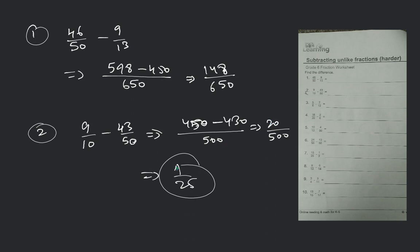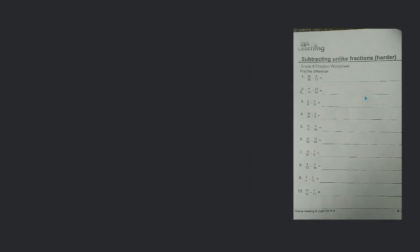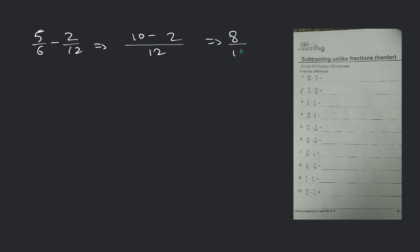Understood? Number 3: 5 by 6 minus 2 by 12. The LCM will be 12. It will be giving 10 minus 2 = 8 by 12, and that will be 2 by 3 — 2 by 3 will be the final answer.